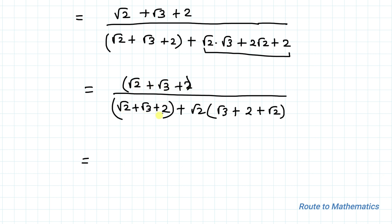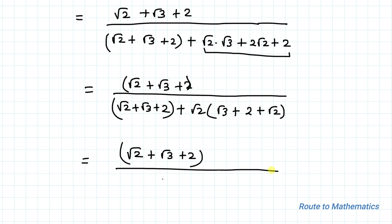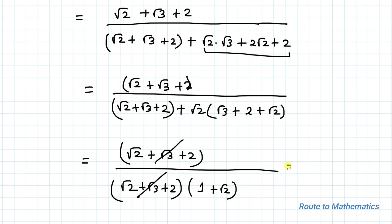We can see that in the denominator we have the same terms as the numerator: root 2 plus root 3 plus 2. So let's take out root 2 plus root 3 plus 2 as a common factor. We get root 2 plus root 3 plus 2, divided by root 2 plus root 3 plus 2, multiplied with 1 plus root 2. These two terms cancel out, giving us 1 over 1 plus root 2.